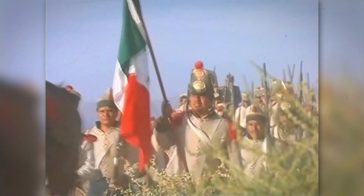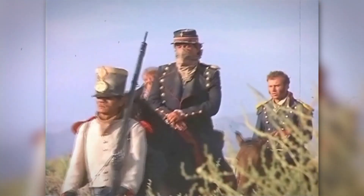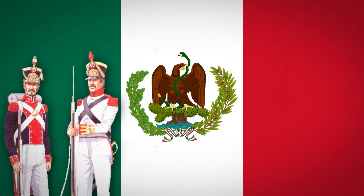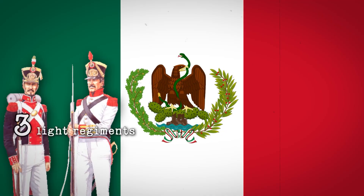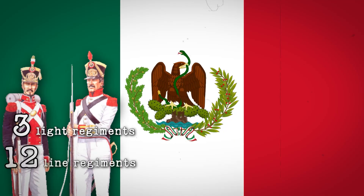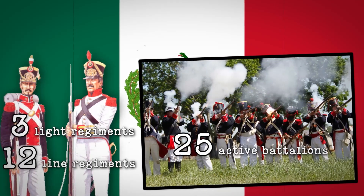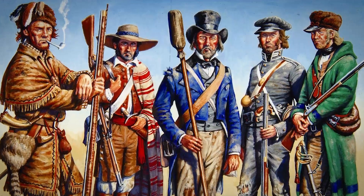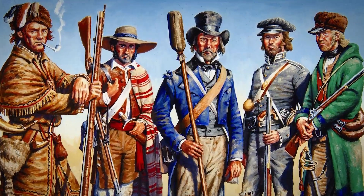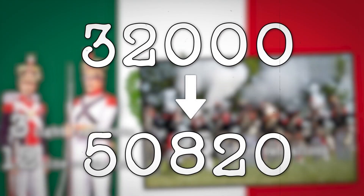Mexico had a complex military force structure by 1845. The Mexican regular army included three light regiments and 12 line regiments, as well as 25 active battalions. The total strength of the Mexican army by 1845 was 32,000 men. By the end of the war, this number increased to 77,000 people.